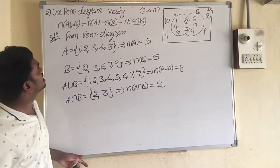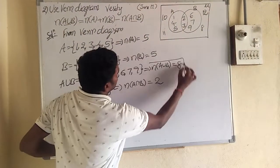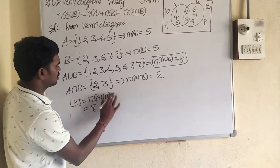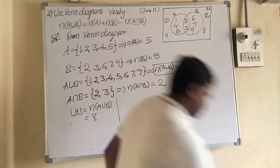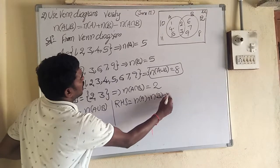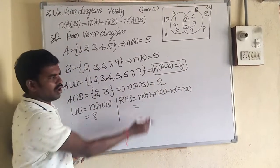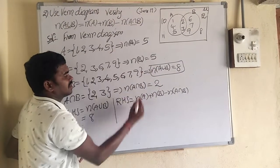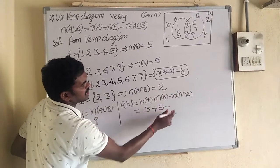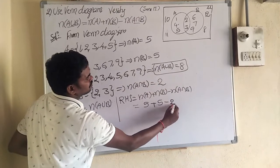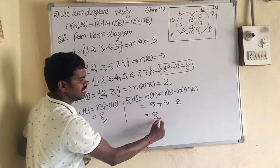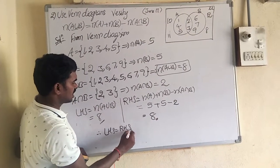Now I am verifying whether the given condition is right or not. LHS: N of A union B equals 8. RHS: N of A plus N of B minus N of A intersection B equals 5 plus 5 minus 2 equals 10 minus 2 equals 8. LHS equals 8, RHS equals 8. Therefore LHS is equal to RHS. Hence proved.